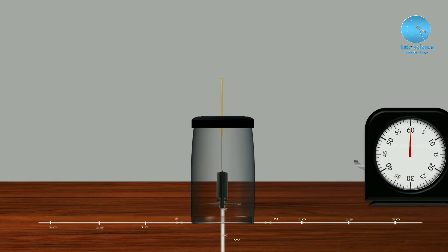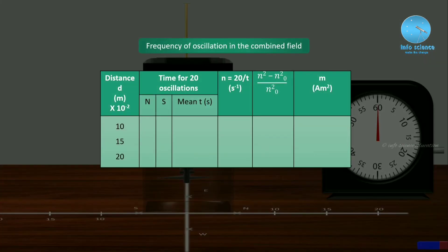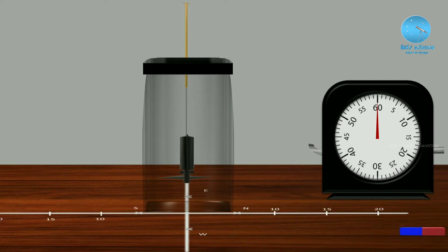The experiment starts. For 10 cm distance, we place the bar magnet with its north pole pointing in the north direction and south pole in the south direction — the red color indicates north.